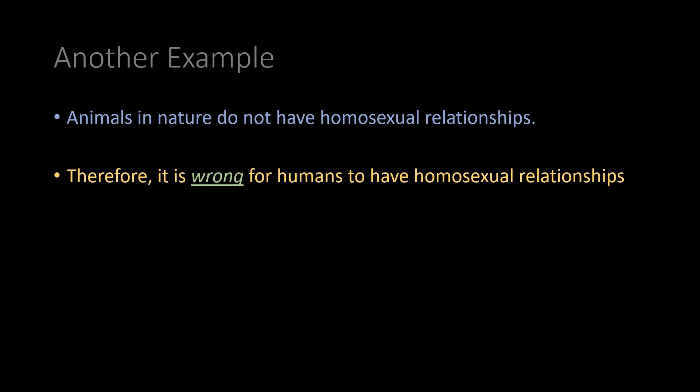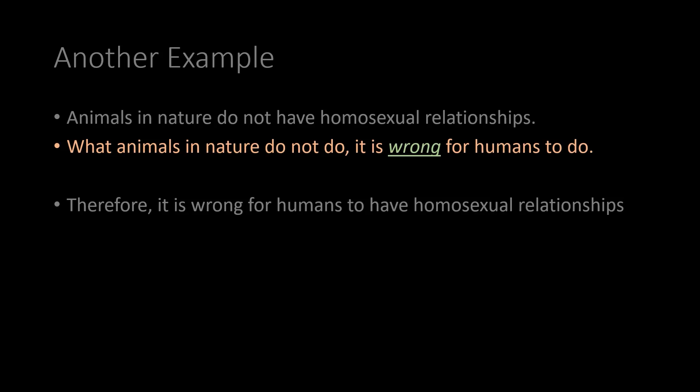What animals do tells us nothing about what humans should do. To complete this argument, one would have to add a prescriptive premise — something like: what animals in nature do not do, it is wrong for humans to do. But then this premise is clearly false. When's the last time you saw an animal select and listen to a YouTube video to understand the problem of deriving prescriptive ought-conclusions from is-premises? How many animals have performed brain surgery recently, or programmed a webpage, or played a game of solitaire? So the argument fails. It doesn't provide anything like a good reason to reject or condemn homosexual relationships. If somebody wants to show that homosexual relationships warrant condemnation, they're going to need a different argument.